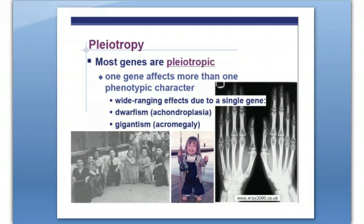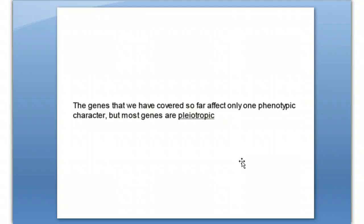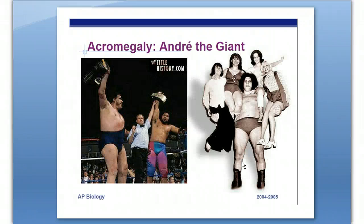Pleiotropy is where one gene can affect more than one characteristic. For example, the gene for dwarfism affects all the body parts of a person and makes all the body parts smaller. Dwarfism and the opposite — gigantism — are examples of one gene having multiple effects. Most genes are pleiotropic, meaning there are a lot of genes that have multiple effects. André the Giant — if you ever saw The Princess Bride — had gigantism, and the one gene had multiple effects resulting in a larger person.